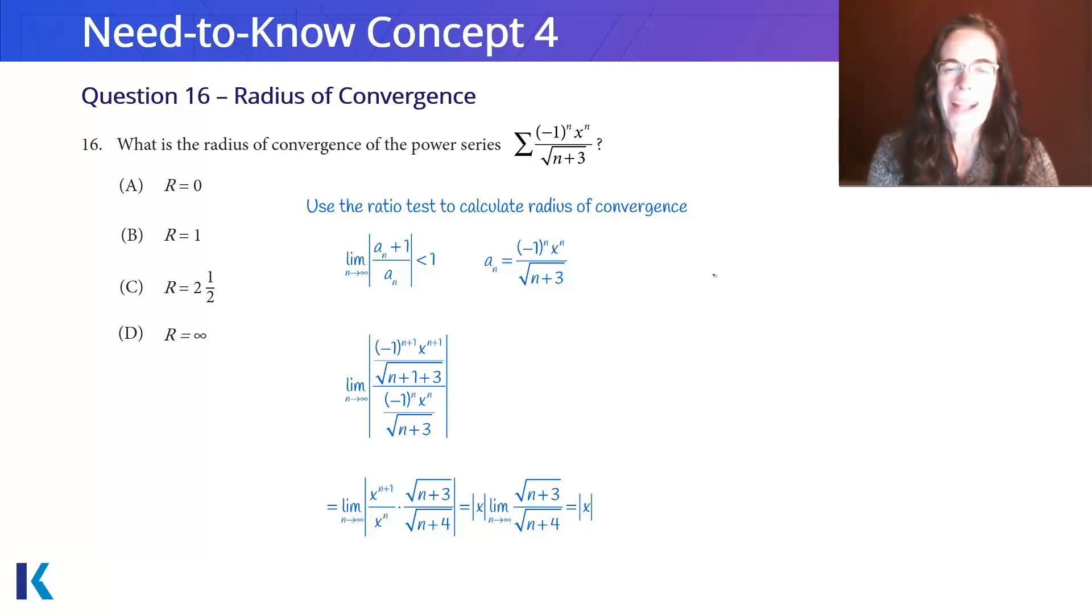Now, with that x to the n plus 1, I can pull that out front and I can say, the absolute value of x is equal to the limit here of the square root of n plus 3 over the square root of n plus 4.